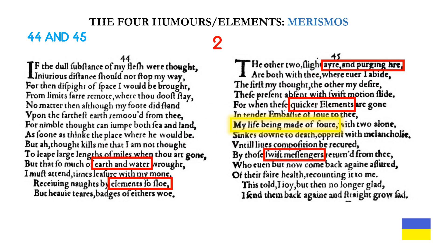The four humors and elements — another example of merismus. In medieval and Renaissance psychology, people were typed according to humors, and there were four of them, each comprised of a mixture of the four elements. In sonnet 44 we have earth and water, which were considered slow elements. Sonnet 45 has air and fire, which are considered quicker elements as stated in line five of sonnet 45 — and they are also swift messengers. My life being made of four in sonnet 45 describes how the elements and the four humors comprise a person's life according to the physiology and psychology of the time.